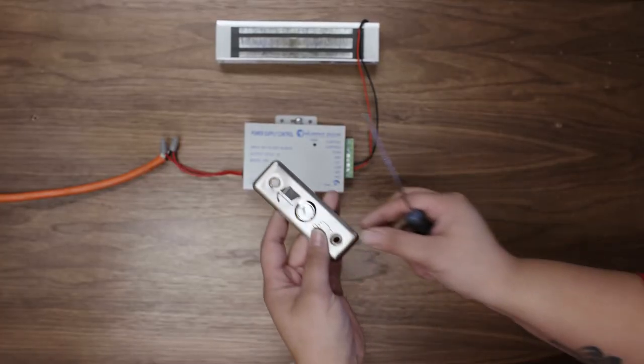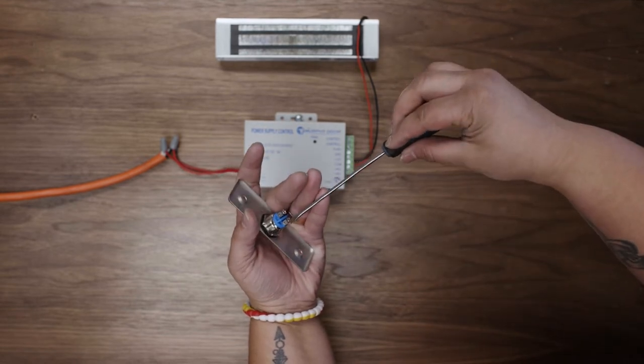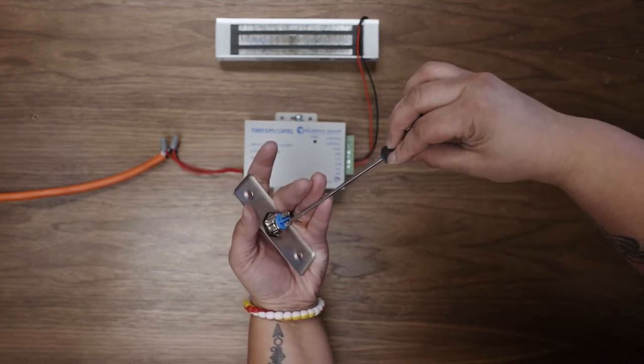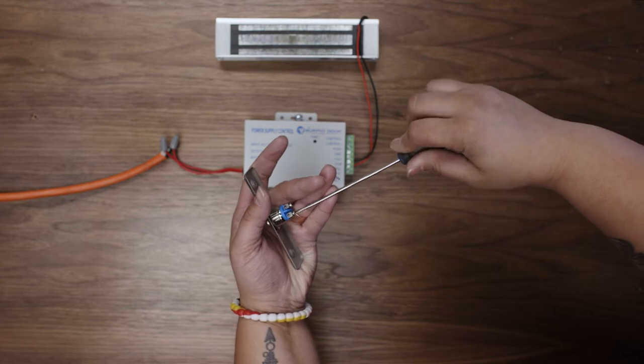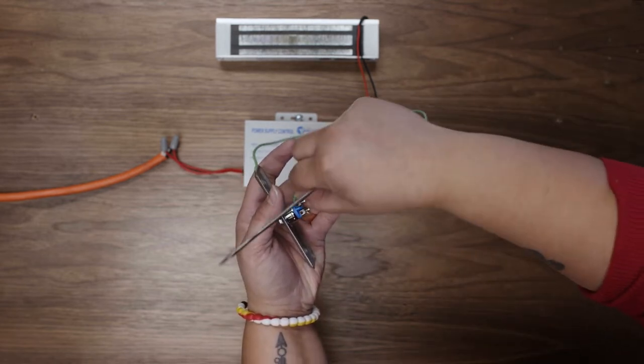You will receive two pushbuttons with your door and you will need to wire both of them at the same time in the same way. We are only wiring one pushbutton in this video for visual clarity. Connect two wires to the terminals on the pushbutton.